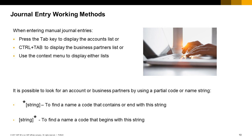Note that you can search for an account or a business partner using the GL account or BP name field. If you know the first character of the customer code or name, specify it followed by an asterisk, then press Ctrl+Tab to produce a list of all customer codes starting with that character. If you know a partial customer code or name, place an asterisk first and then the partial code or name, then press Ctrl+Tab to display a list of all records containing that string. The same goes for an account, but with pressing Tab to display the accounts list.